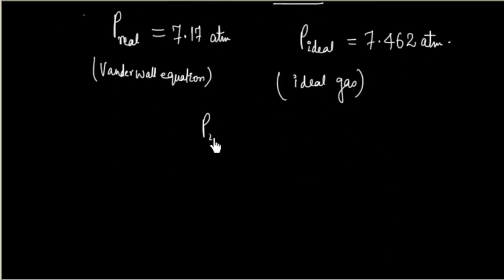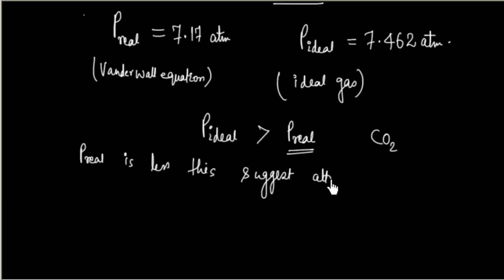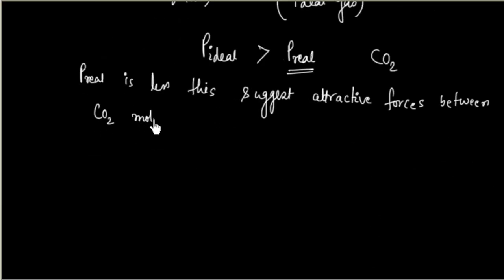You see, P ideal is basically greater than P real. This means in real gases, CO2, pressure is less. This is maybe due to the attraction forces between CO2 molecules. Real pressure is less. This suggests attractive forces between carbon dioxide molecules are predominating. That's why we have real pressure that is less than the ideal pressure.